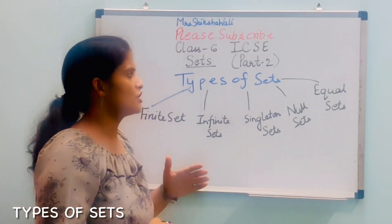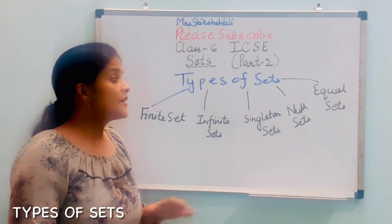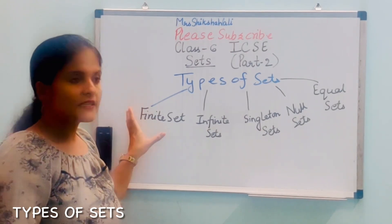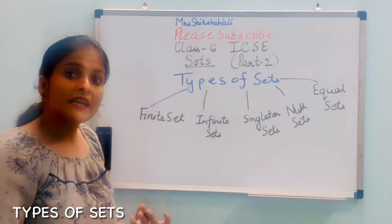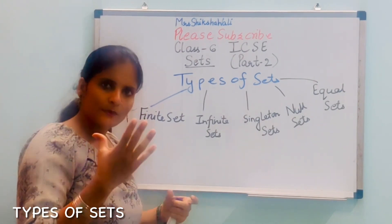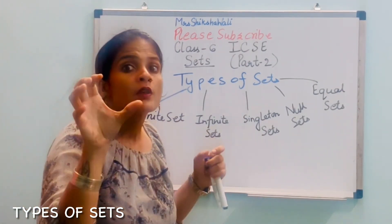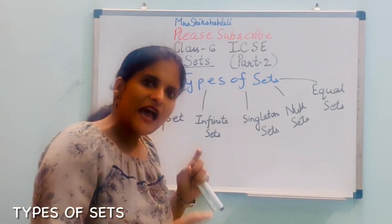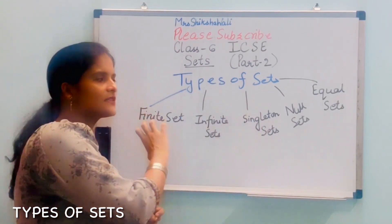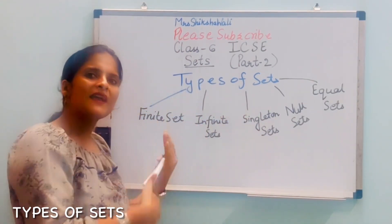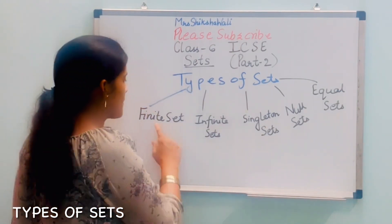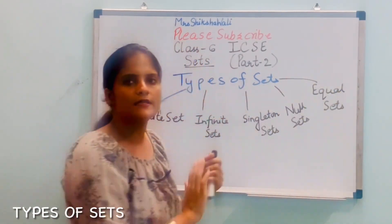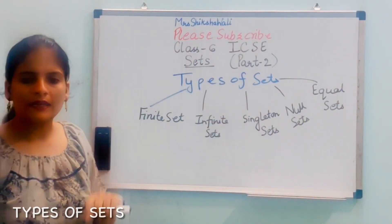In Part 1, I covered three methods of representation. Now in types of sets — sets ki 5 types hoti hain: Finite sets, Infinite sets, Singleton sets, Null sets, and Equal sets. Now I will tell you all about these sets.